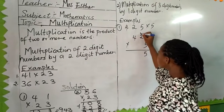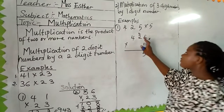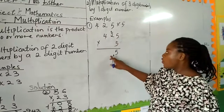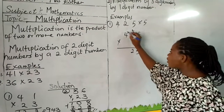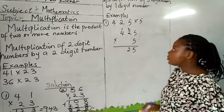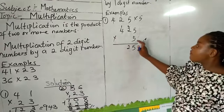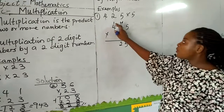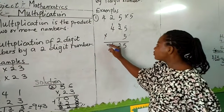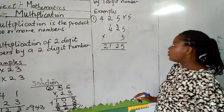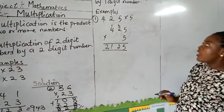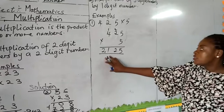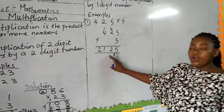Remember to put your 2 here so you won't forget. 5 times 2 gives us 10 plus 2 is 12, so you write your 2 and put your 1 there. 5 times 4 gives us 20, plus 1 gives us 21. So for 425 times 5, our final answer is 2125.